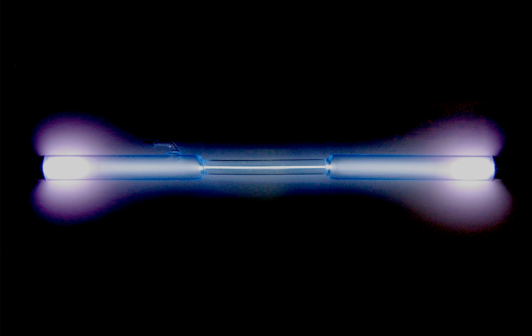Xenon is obtained commercially as a by-product of the separation of air into oxygen and nitrogen. After this separation, generally performed by fractional distillation in a double column plant, the liquid oxygen produced will contain small quantities of krypton and xenon. By additional fractional distillation, the liquid oxygen may be enriched to contain 0.1–0.2% of a krypton-xenon mixture, which is extracted either by absorption onto silica gel or by distillation. Finally, the krypton-xenon mixture may be separated into krypton and xenon by further distillation.